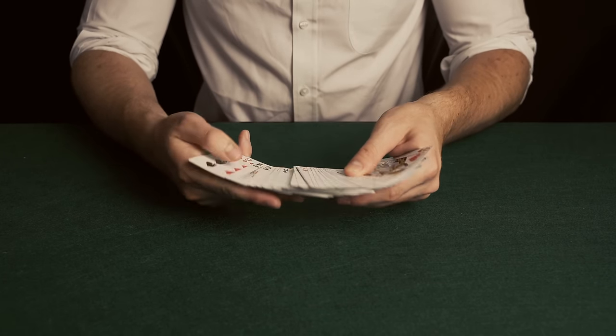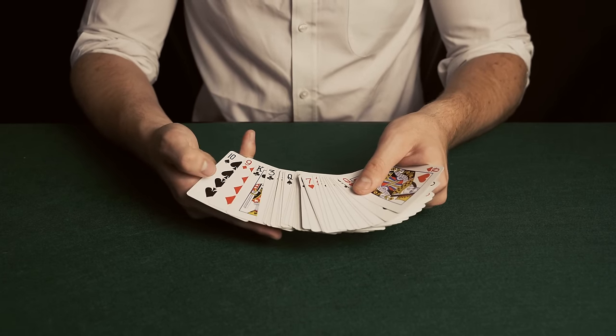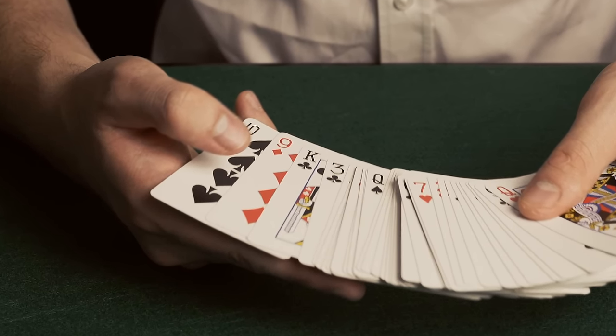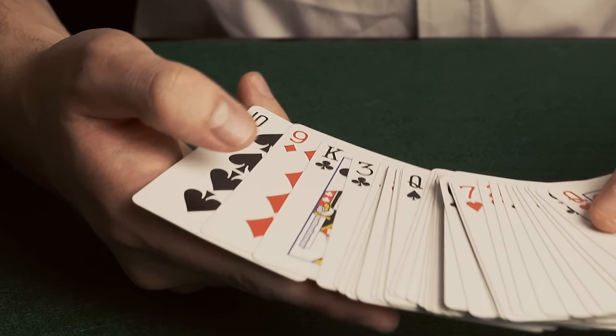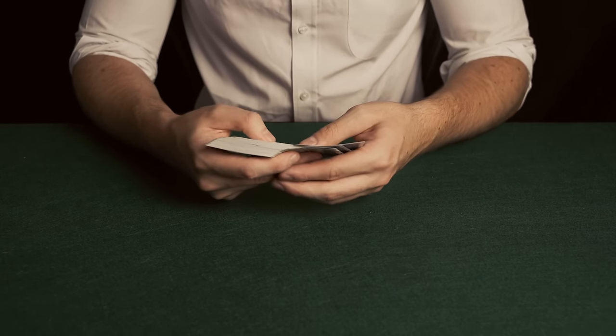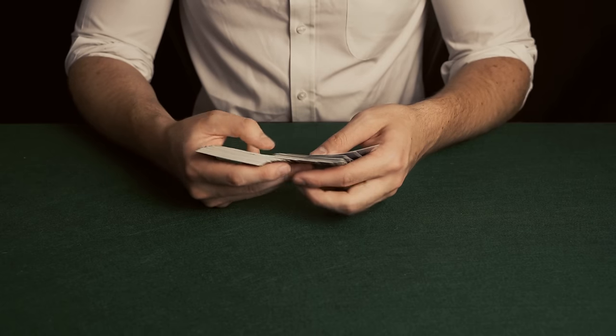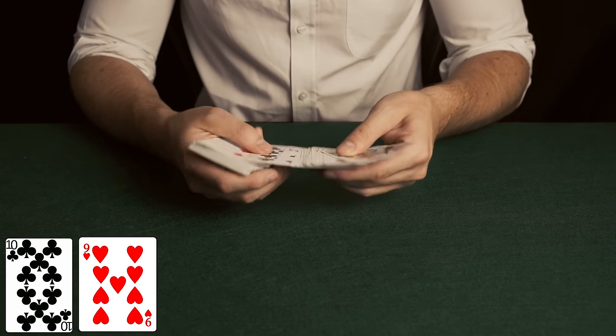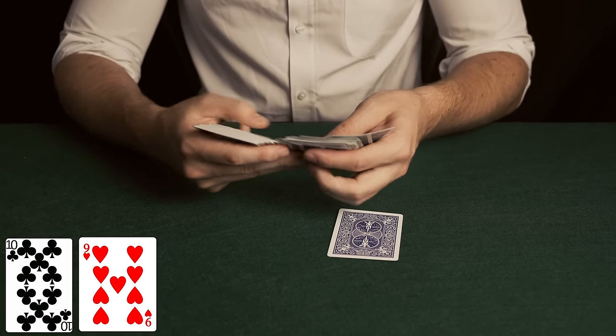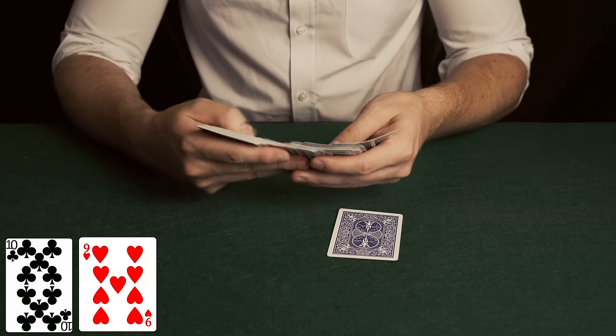Go through the cards and remember the top two cards. In this case, it's the ten of spades and nine of diamonds. Now go through the cards and find the matching pair for these cards. So this would be the ten of clubs and nine of hearts. Place these cards on the table face down as your predictions.